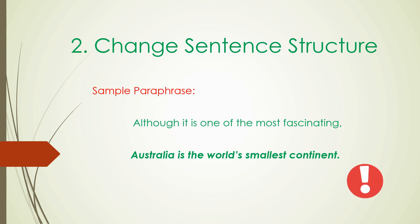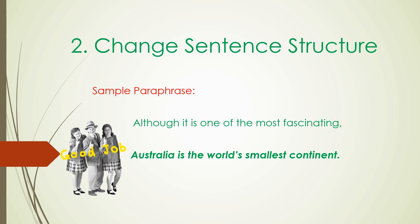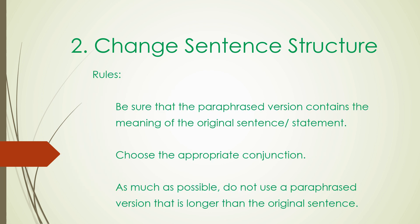In paraphrasing style number two — changing structure — you have to change the positions of the two sentence parts. In this example, you will notice that part number two now comes at the beginning of the sentence, while part number one of the original sentence is now at the end. Here are the rules: one, be sure that the paraphrased version contains the meaning of the original sentence. Two, choose the appropriate conjunction. And three, as much as possible, your paraphrased version should not be longer than the original sentence.